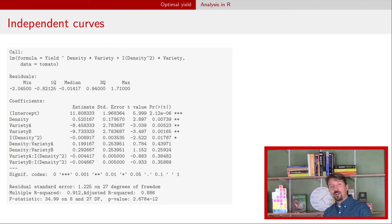Finally if you have the situation where you have independent curves - that is a different curve for every variety - then what you need to do is decide on which variety you're going to find the maximum density for. So if you decided variety C then that's fine because that was the reference level so you can ignore everything down below and just use the coefficients for density.